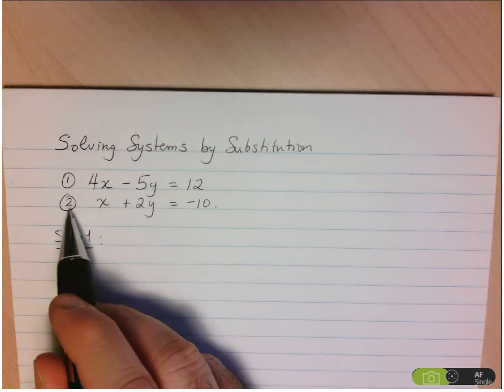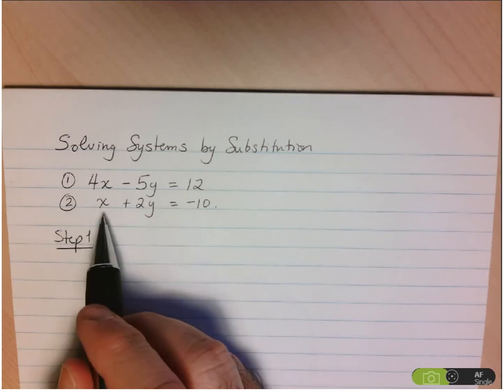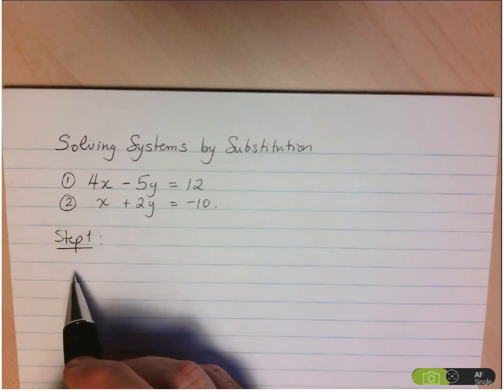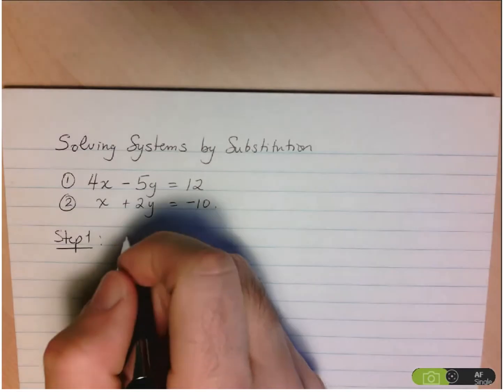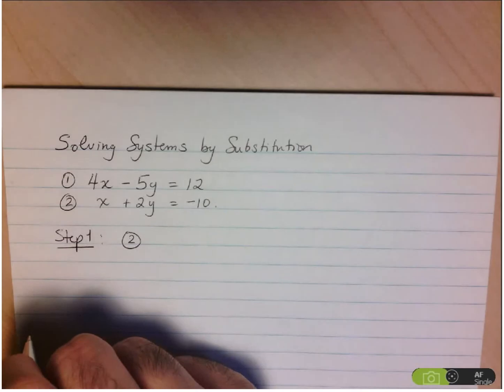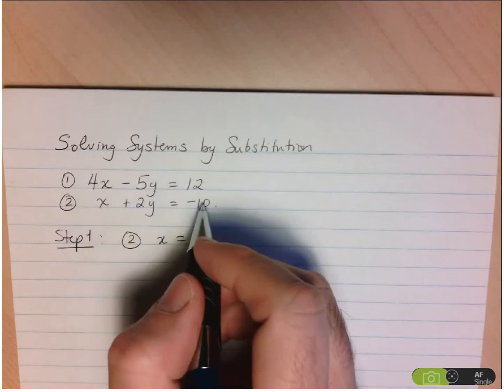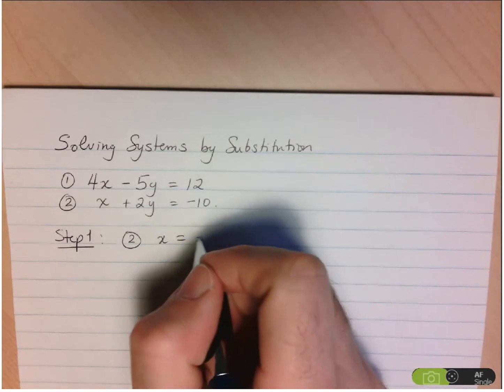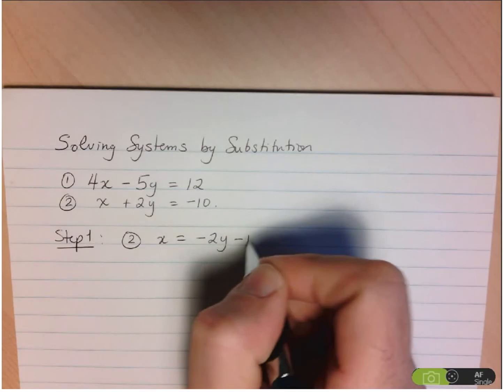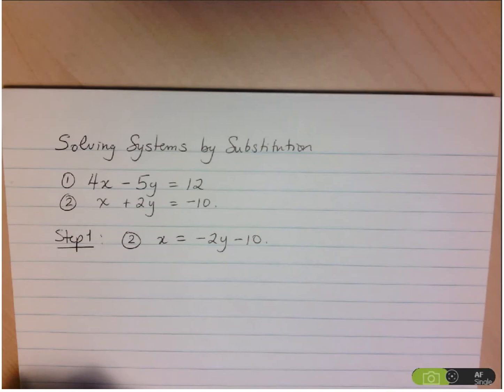So step 1 here, clearly equation 2 is the one to pick because the x variable has a coefficient of 1. So the first thing I'm going to do is take equation 2 and I'm going to isolate x. So x here, I just take the 2y to the other side and I end up with negative 2y minus 10. And that's it. Just find the variable and isolate it.